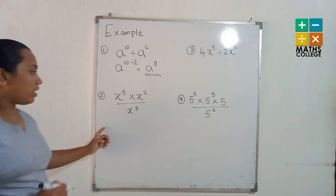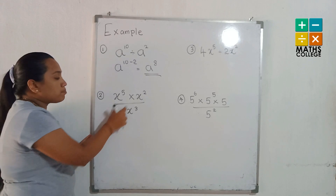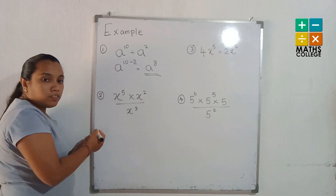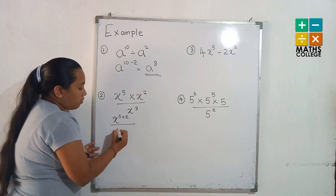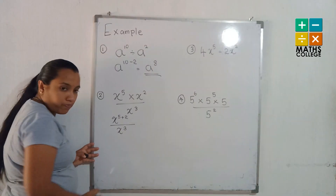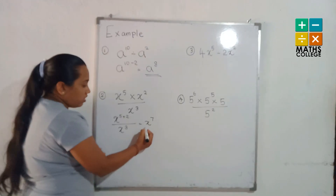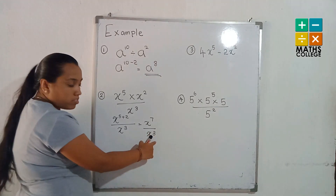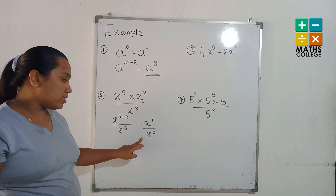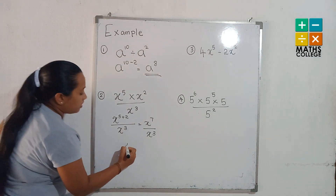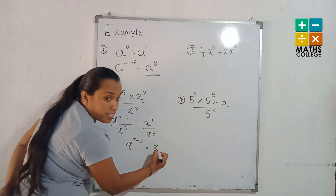The second one has both product and division in the same question. First, do the product step — add the indices on the top: x to the power 5 times x to the power 2, giving x to the power 7. Then divided by x to the power 3. Applying the same-base division rule, subtract 3 from 7. The answer is x to the power 4.